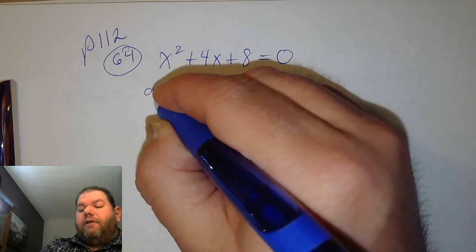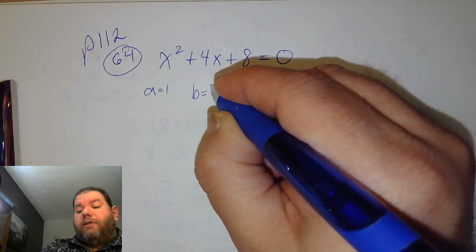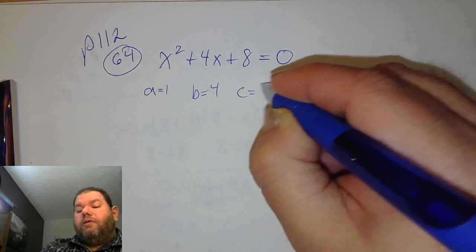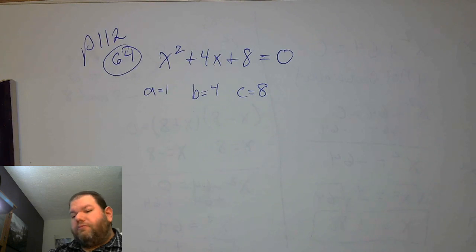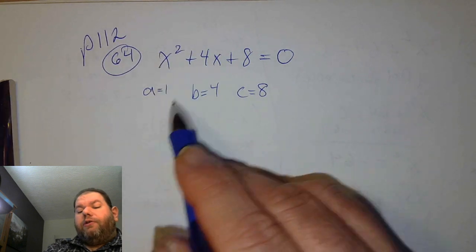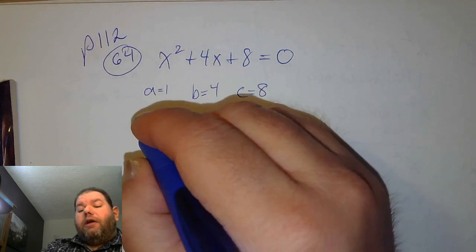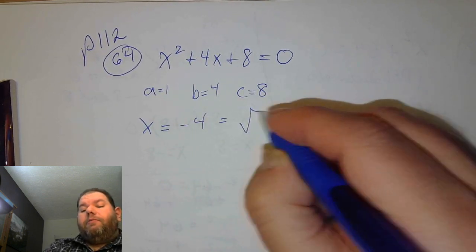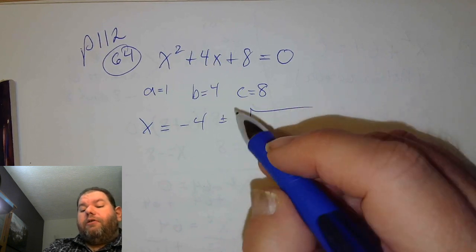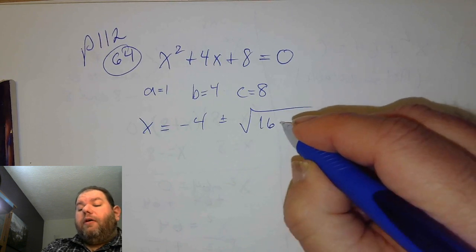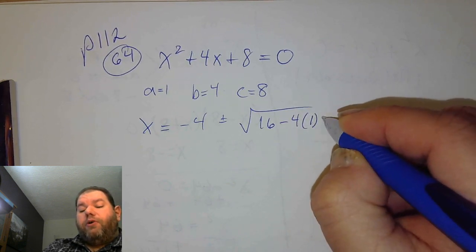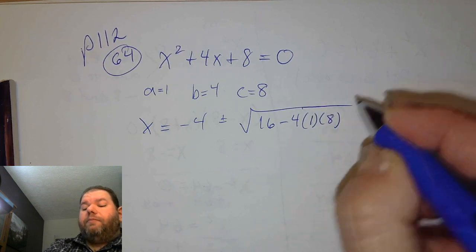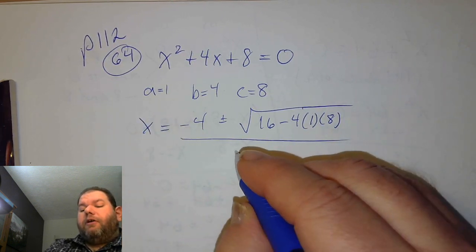We substitute into the quadratic formula using a equals 1, b equals 4, c equals 8. So x equals negative 4, plus or minus the square root of b squared — 4 squared is 16 — minus 4 times a, 1, times c, 8. We still have 2 times a, which is 2, on the bottom.